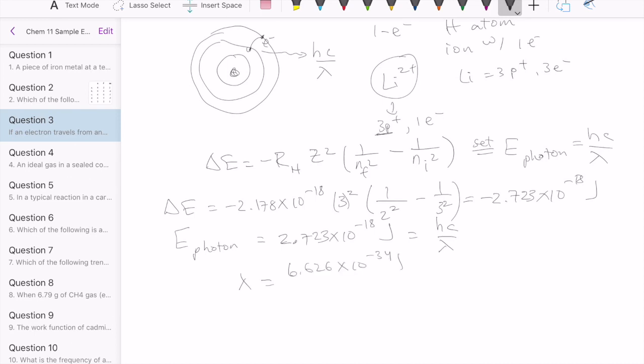To solve for lambda, it will just be hc. H, of course, is this value. Speed of light is this. Then divide that by the energy of the photon that we got in the earlier calculation. Cancel out the appropriate units. We get 7.3 times 10 to the minus 8 meter or 73 nanometer.